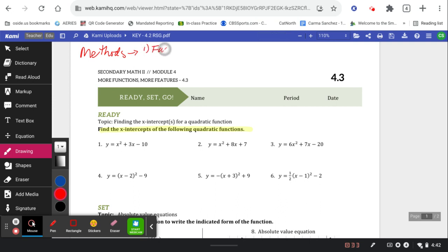Method number one, we always want to try factoring. Method number two, we want to try maybe complete the square. It doesn't have to be in this order. And method number three is the formula. Works every time. x equals negative b plus or minus square root b squared minus 4ac all over 2a.